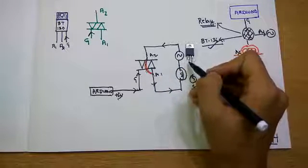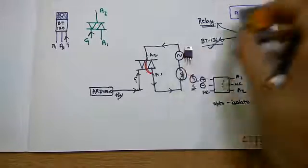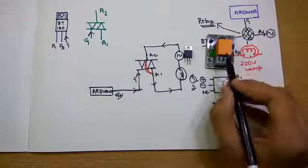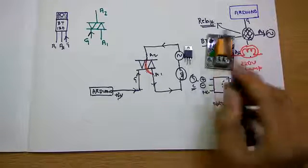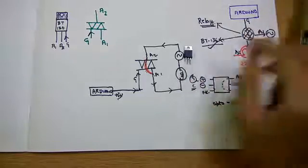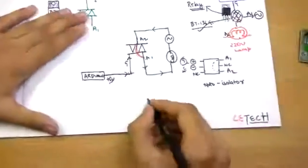This is beneficial over the relay thing because when you have to switch on something, you have to continuously give power to the electromagnets in this relay, which is not so in the case of the triac. And very less power is dissipated also in the triac.